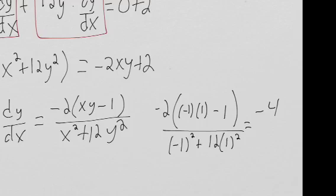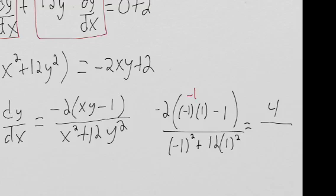Wait, that's because this is -2. Or sorry, -1 minus 1 is -2 total times -2 is, sorry, positive 4. Positive 4. And then on the bottom we have 1 plus 12, so that's 13.